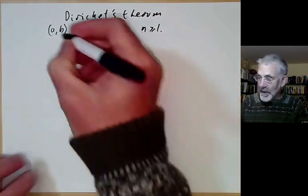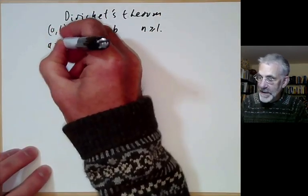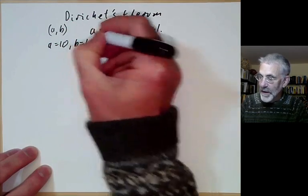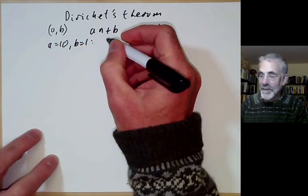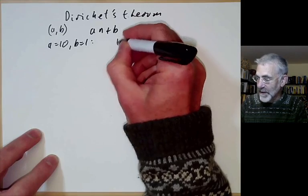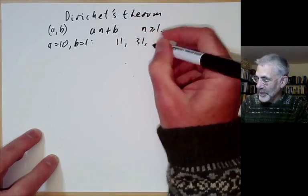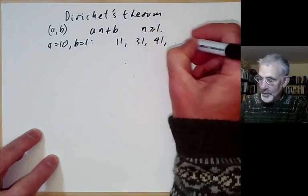For example, if we take a equals 10 and b equals 1, this means there are infinitely many primes with last digit 1, and you can see there's 11, 31, 41, and so on.